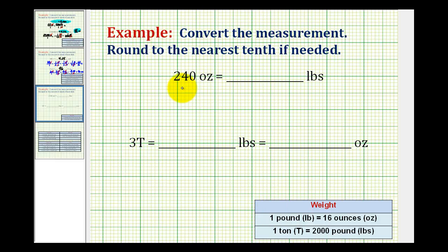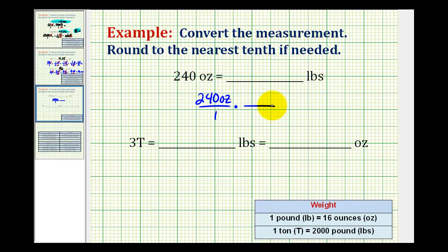In the first example, we want to convert 240 ounces to pounds, and the conversion is one pound is equal to 16 ounces. We'll start by writing the given weight in fraction form: 240 ounces over one, times our unit fraction. Since we want to eliminate ounces, we'll have ounces in the denominator and pounds in the numerator, using the conversion one pound equals 16 ounces.